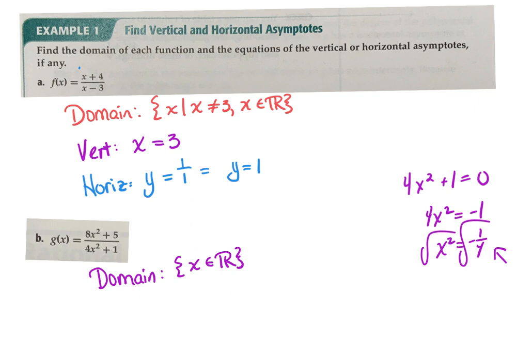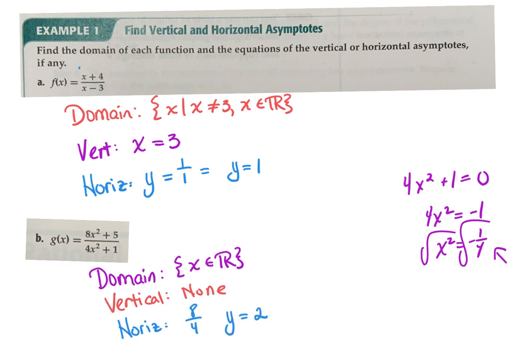Since my domain is all real numbers, I do not have a vertical asymptote — there's no non-removable discontinuity. A continuous function with domain of all real numbers has no vertical asymptote. However, that doesn't mean there's no horizontal asymptote, since horizontal asymptotes deal with y-values, not x-values. The numerator and denominator have the same degree, so my horizontal asymptote is the coefficient on top over 4, giving y equals 2 over 4, which simplifies — so y equals 2 over 4 is my horizontal asymptote.